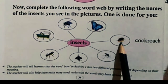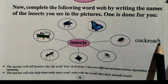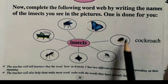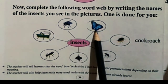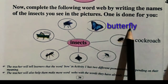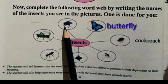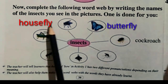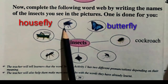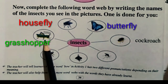This word is called cockroach. Cockroach is called cockroach. I will show you the word butterfly here. This word butterfly is called butterfly. This word housefly — H-O-U-S-E house, F-L-Y fly, housefly. Grasshopper, grasshopper, grasshopper.